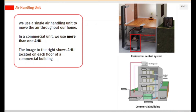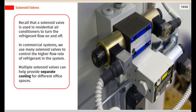In a commercial unit, we use more than one AHU, located on each floor of a commercial building. Recall that a solenoid valve is used in residential air conditioners to turn the refrigerant flow on and off. In commercial systems, we use many solenoid valves to control the higher flow rate of refrigerant in the system. Multiple solenoid valves can help provide separate cooling for different office spaces.